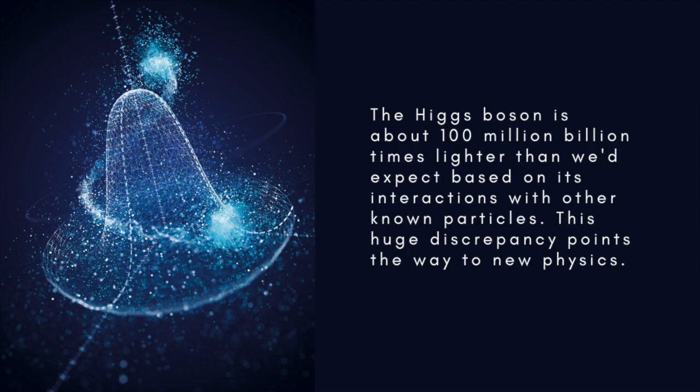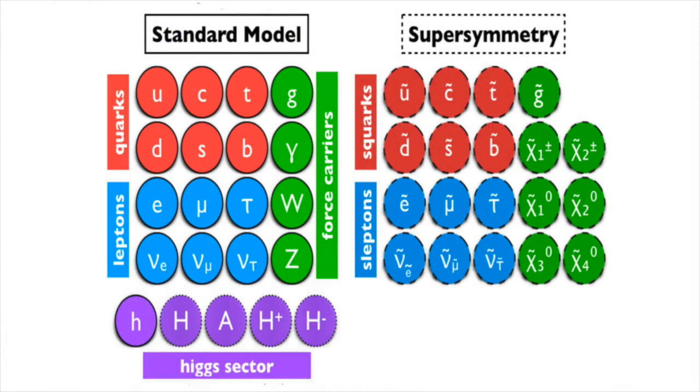But here's the problem. When Higgs Bosons give other particles their mass, theory says they give the same amount back to the Higgs. So from all those contributions from other particles, the Higgs Boson ought to be a real heavyweight. But it isn't. It's many billions of times lighter than the math suggests it should be.